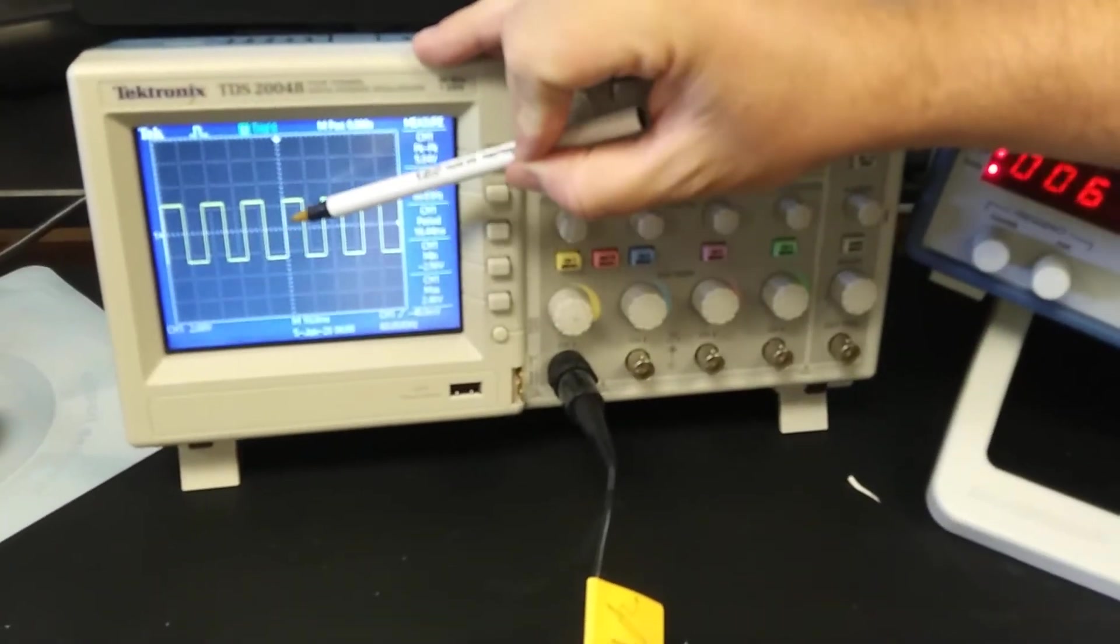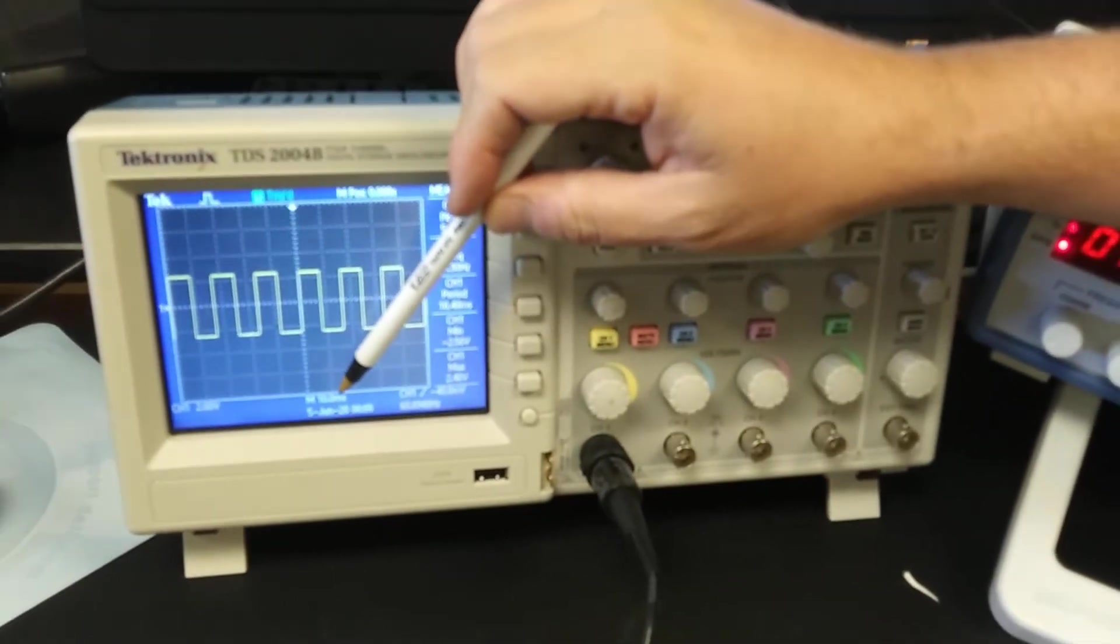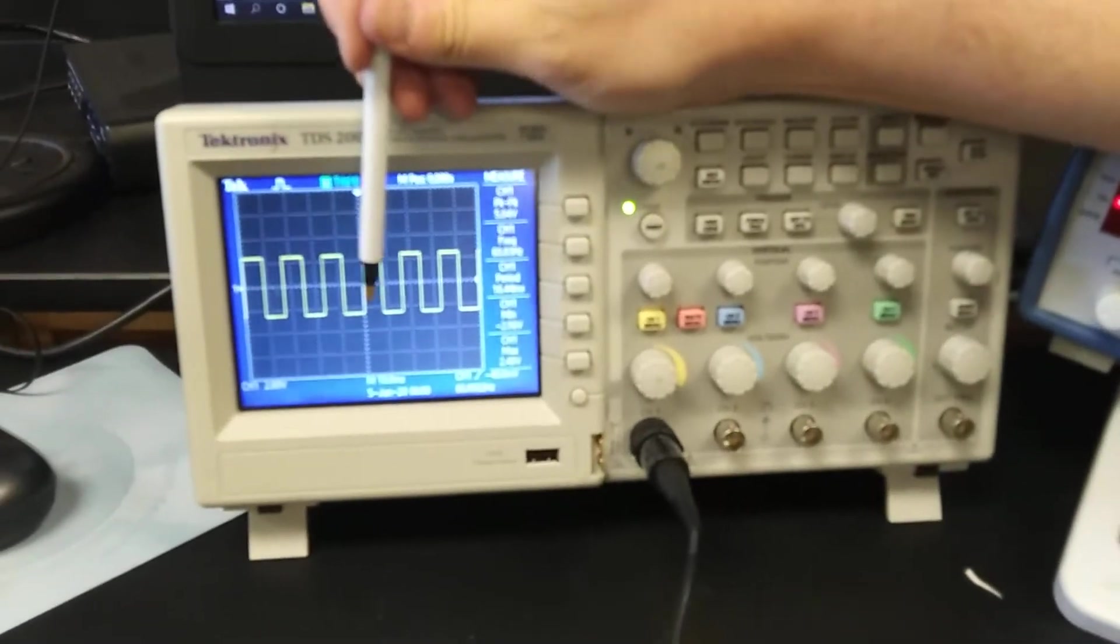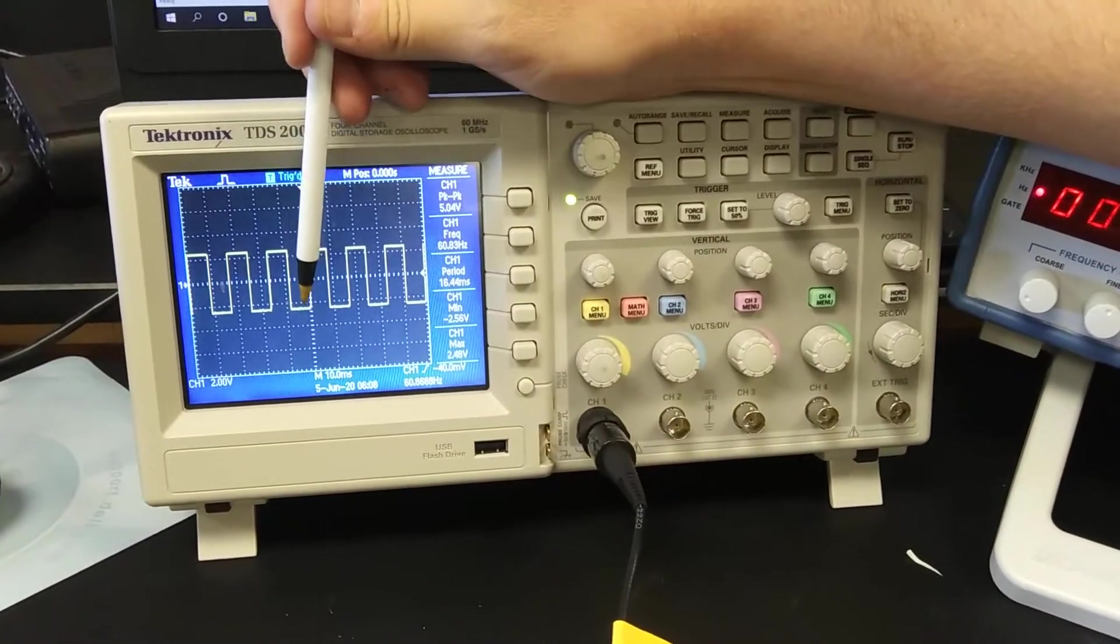Each box on the screen vertically is two volts per division. So two volts, four volts, we see this is about 2.5. Horizontally the divisions are 10.0 milliseconds. So we see that this takes approximately a little less than 20 milliseconds to complete an on off cycle.